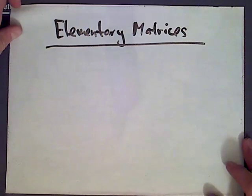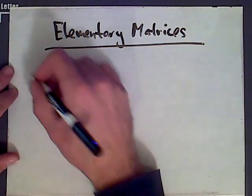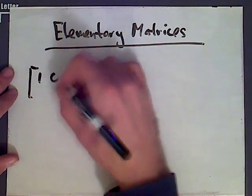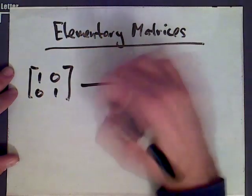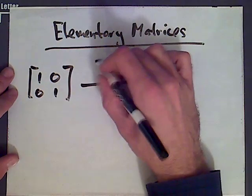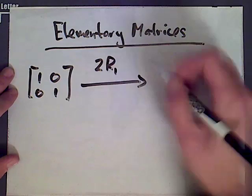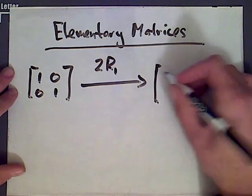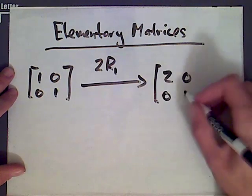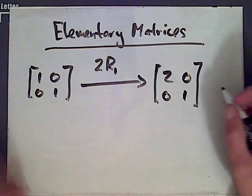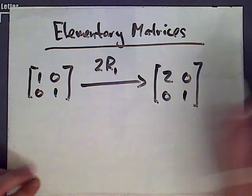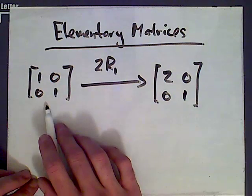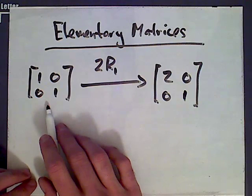Let's take the 2x2 example. We have the 2x2 identity matrix. And let's take the row operation of multiplying row 1 by 2. What we get is 2, 0, 0, 1. This matrix on the right is an elementary matrix because we obtained it from the identity matrix by performing one row operation.